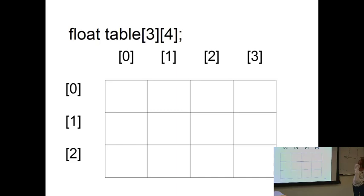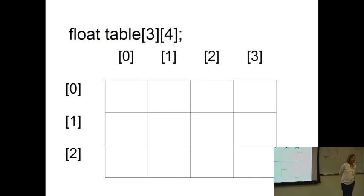Can you guess how we would go about doing work on a two-dimensional array? How would we go about setting this whole array to zeros, for example? Ideas.